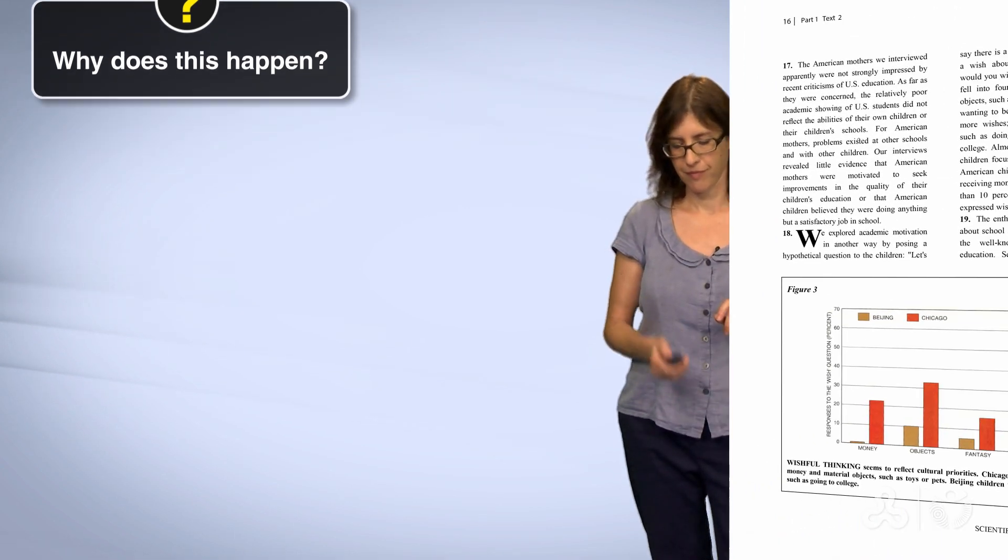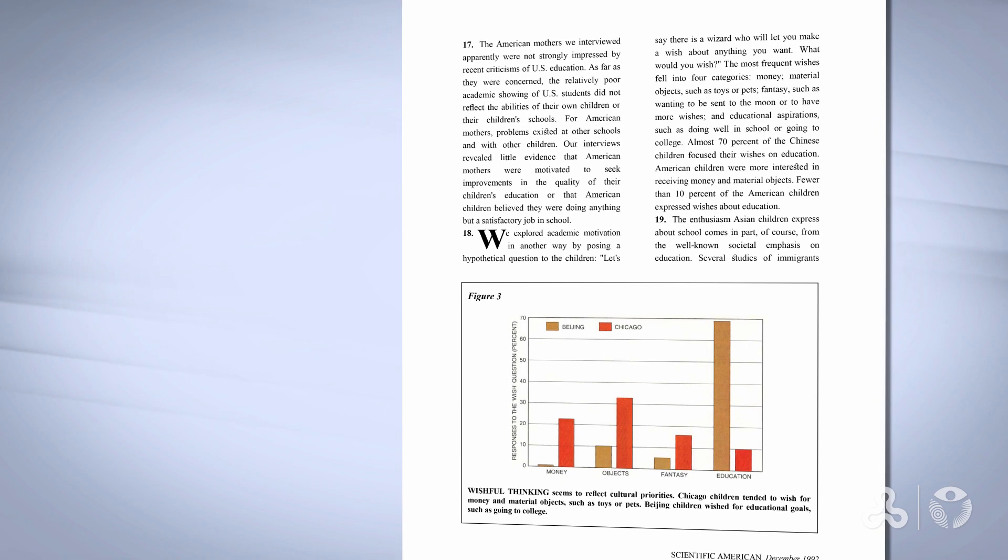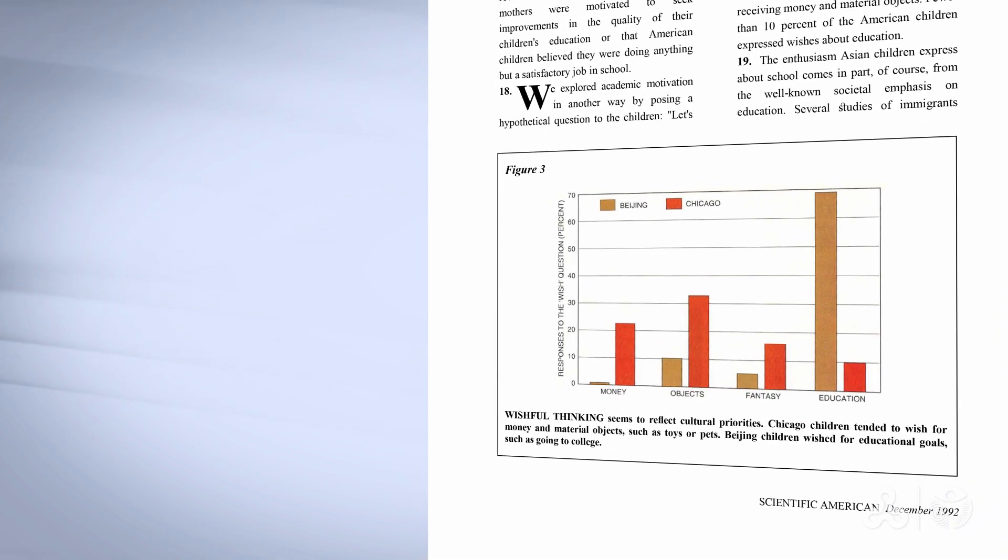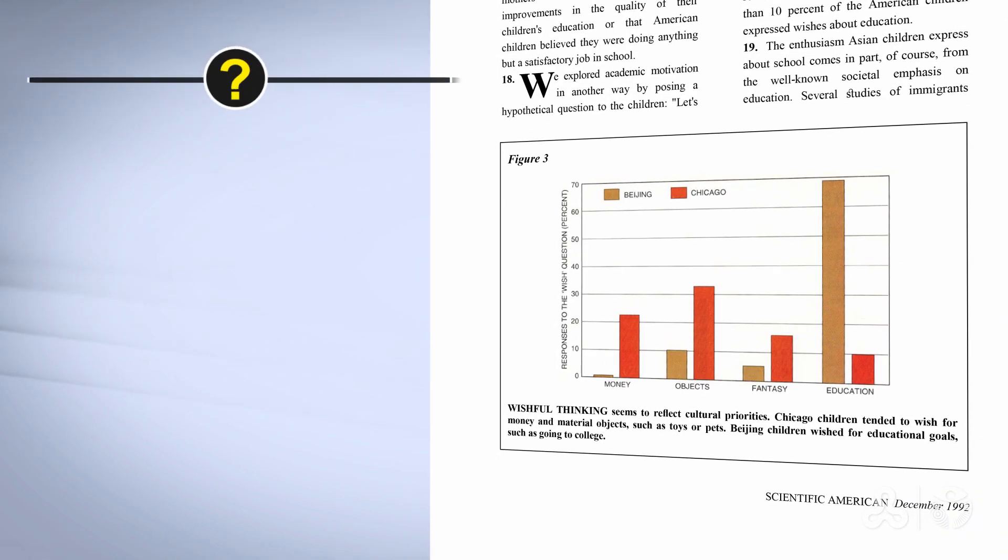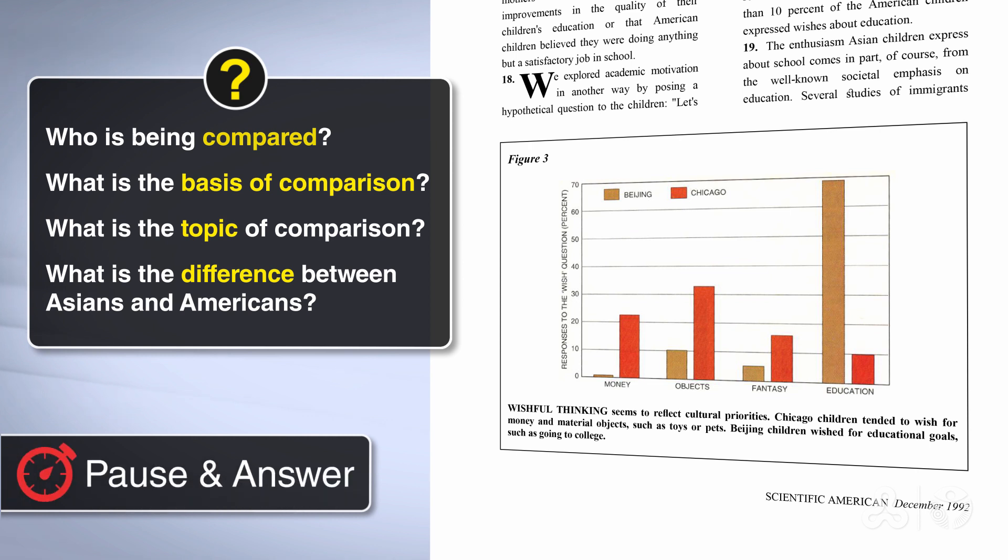Now, the interesting question is why this happens. I will let you think of possible explanations. And maybe we will have some answers in the text. One more graph to do. Let's look at Figure 3. We're asking ourselves again, who is compared? What is the basis of comparison, the topic of comparison? And what is the difference between Asians and Americans? Take a few minutes to look, read, and answer.